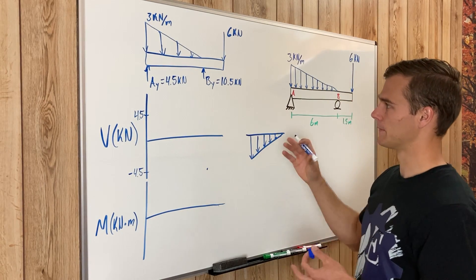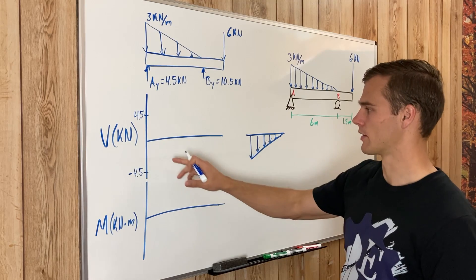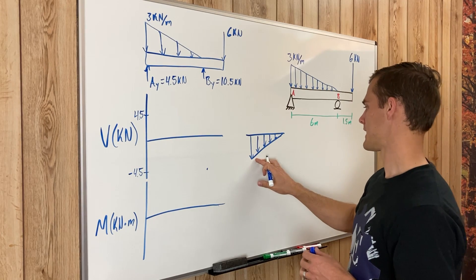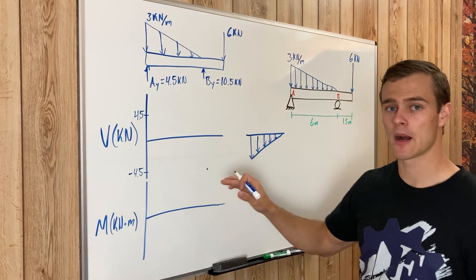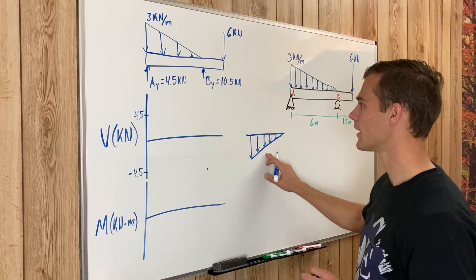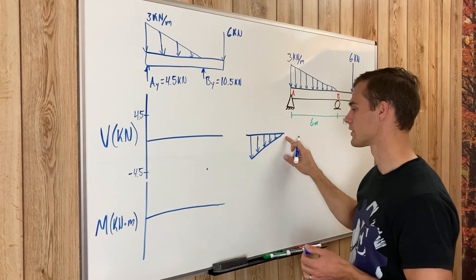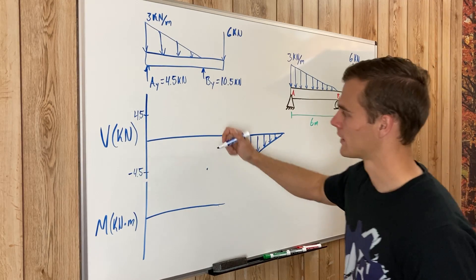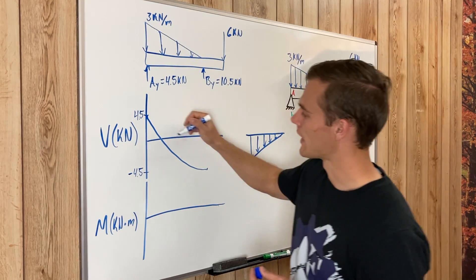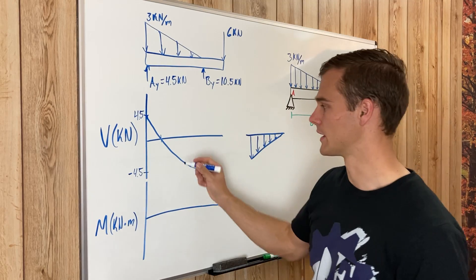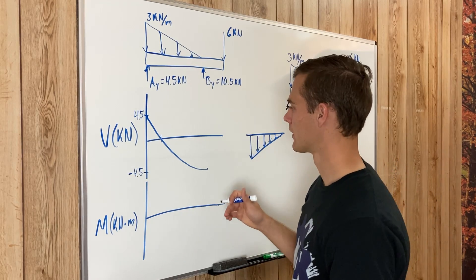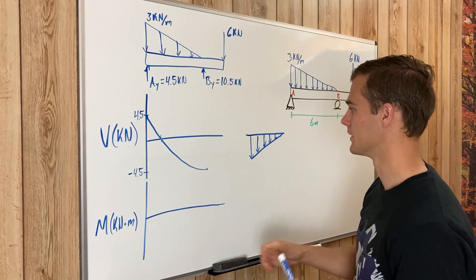Because the load has a triangular shape, the shear diagram will be a parabolic curve — not linear. If the slope is positive it is concave up, if negative it is concave down. Since the distributed load actually has a positive slope (drawing it under the curve reveals this), our shear graph is concave up. We need to find the point where it crosses the axis, because that zero-shear location will be a maximum on our moment diagram.